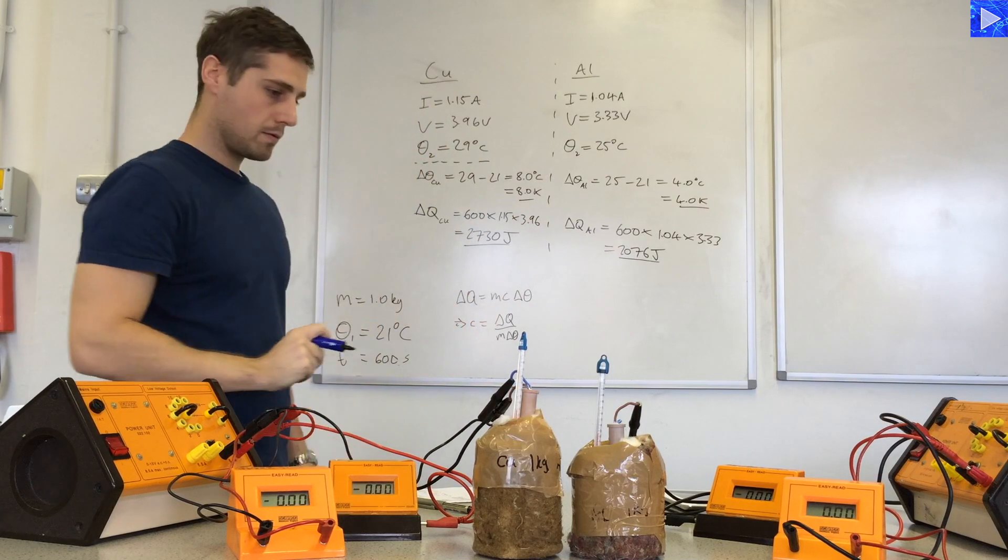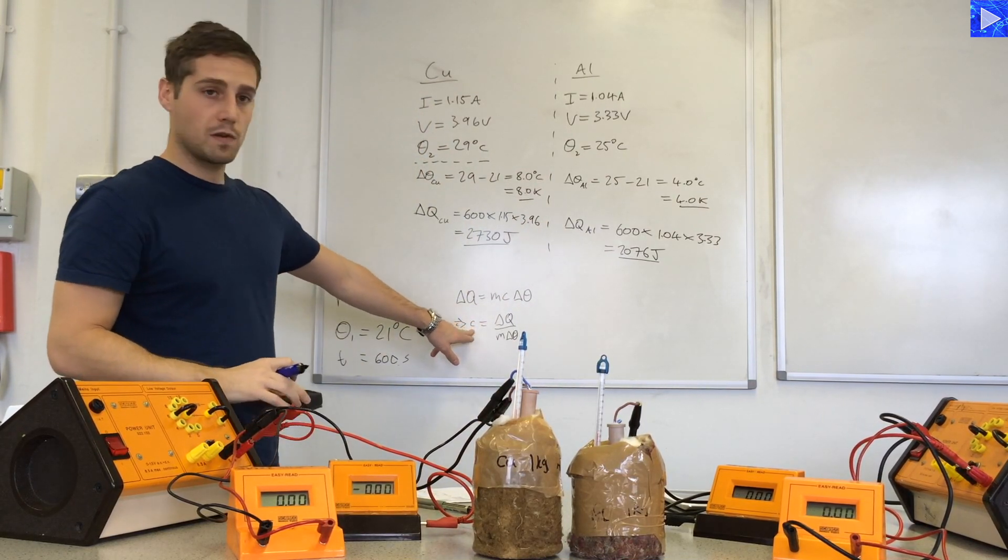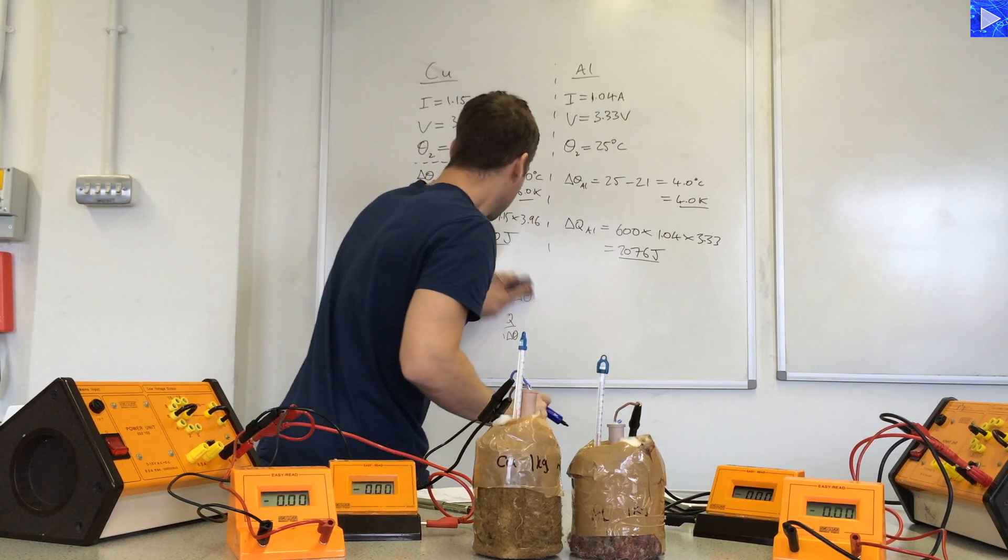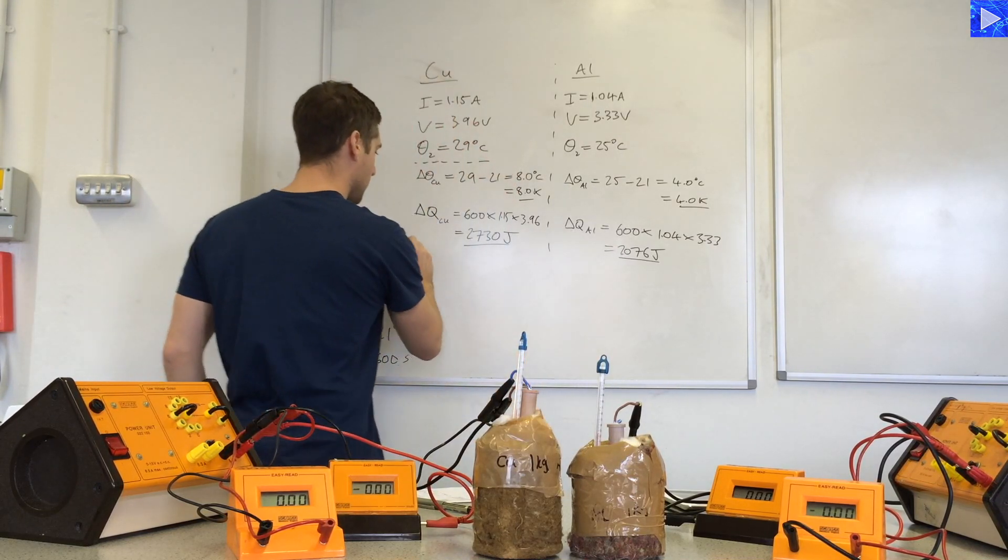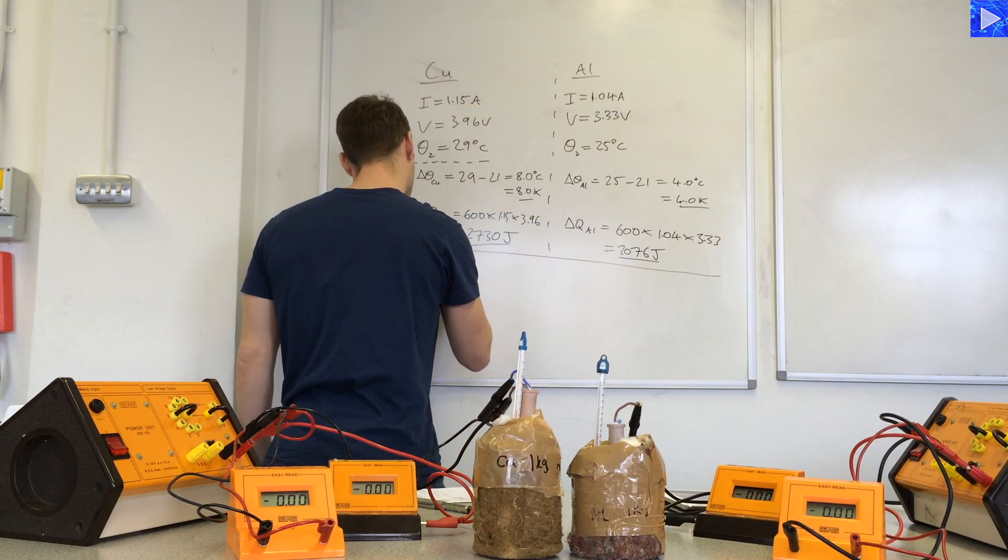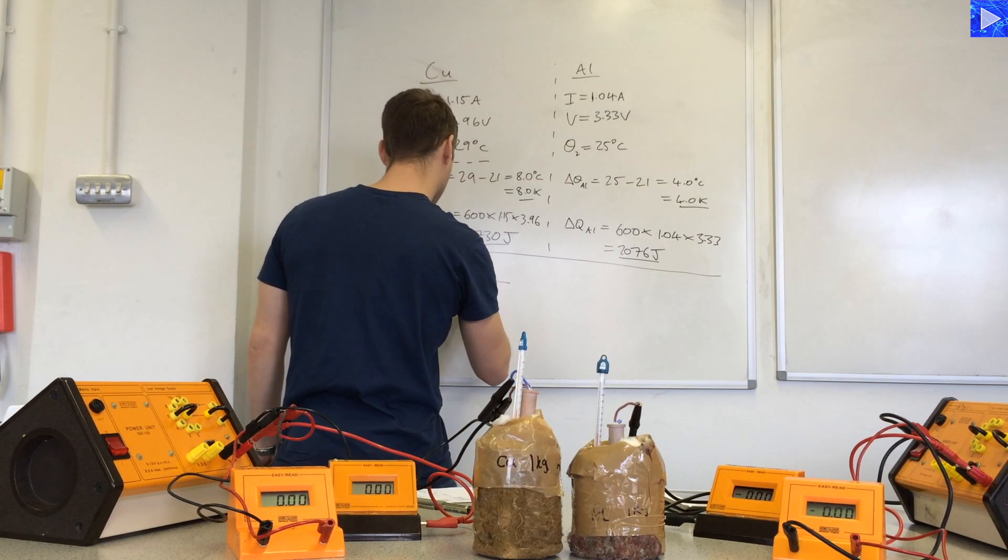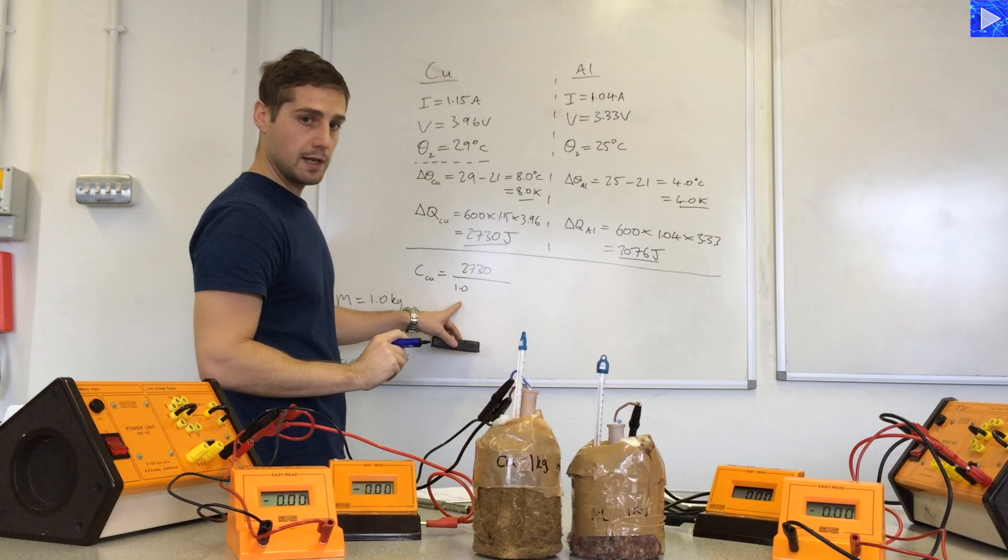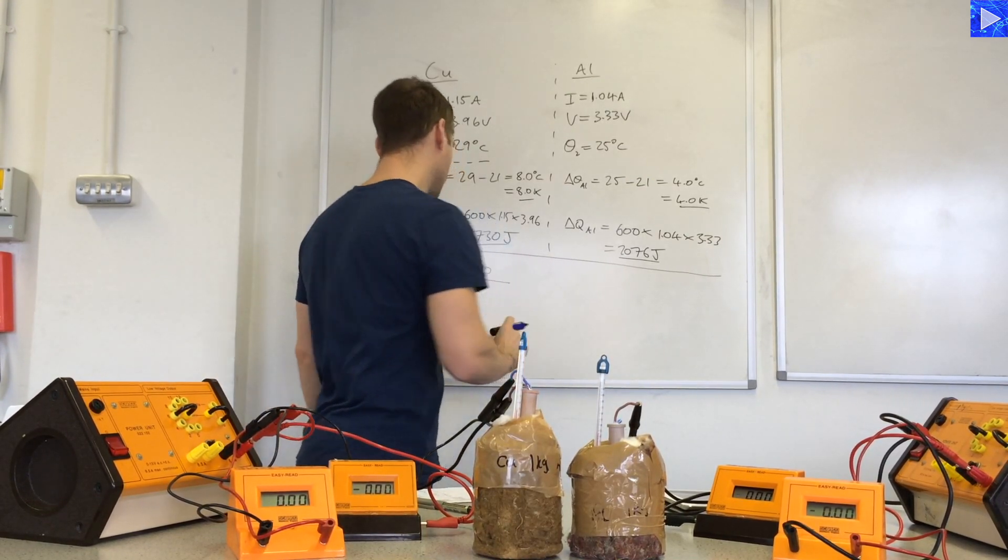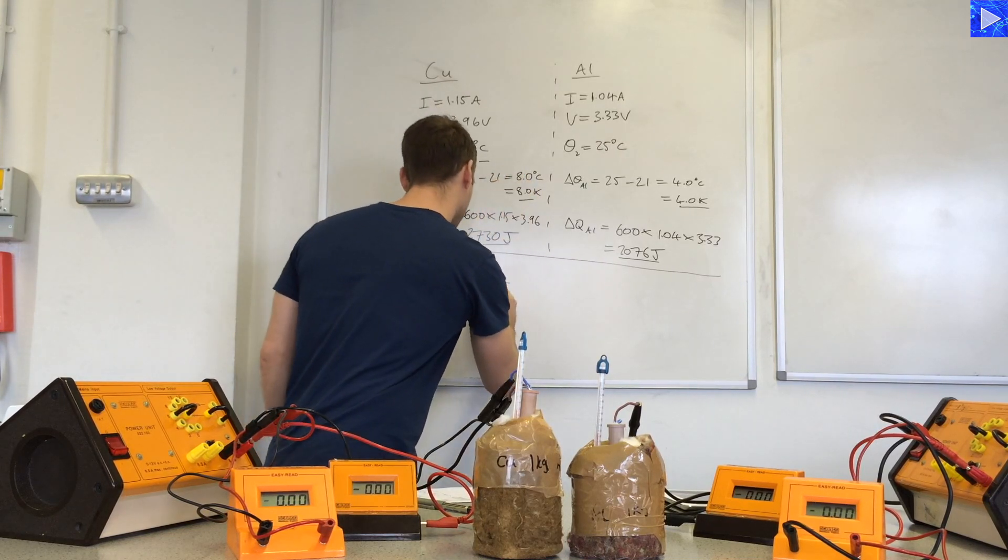We have some data now, we use this equation here to calculate the specific heat capacity. The one is the mass, mass of 1 kilogram, times delta theta, which is up here, 8.0.